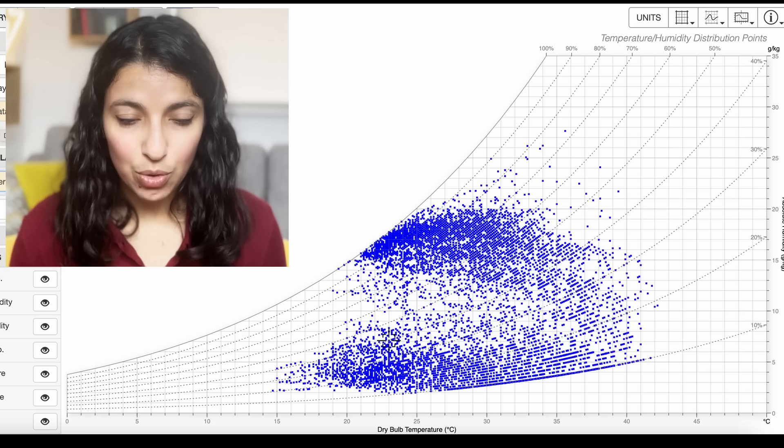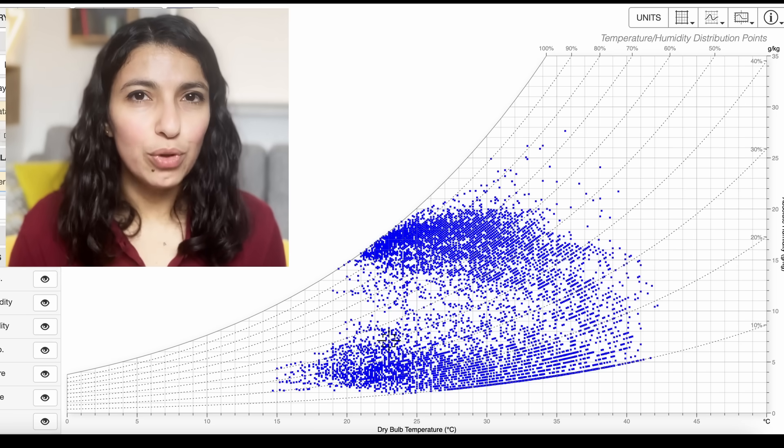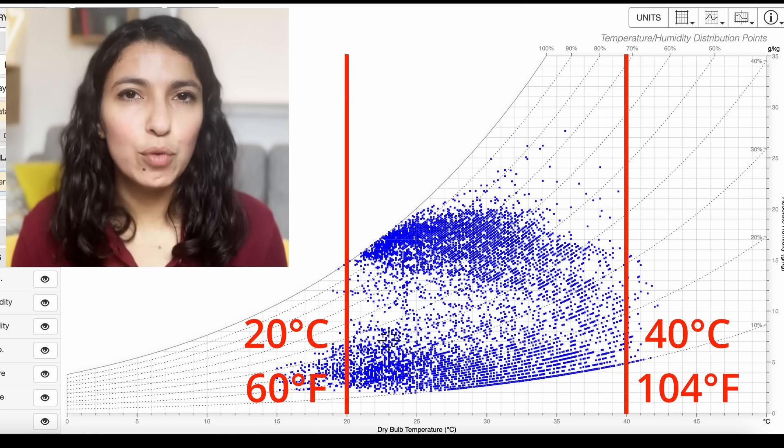As you can see in this psychrometric chart, the bulk of the hours throughout the year, which are the little blue dots, are between 20 and 40 degrees Celsius.